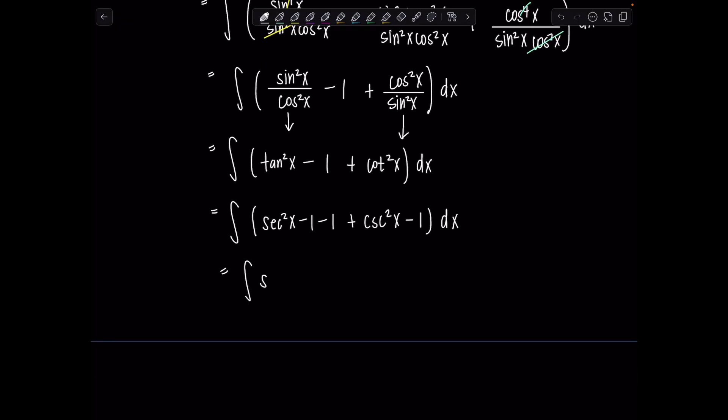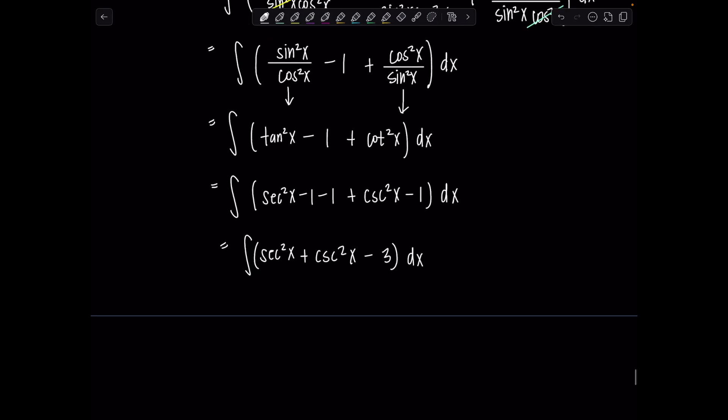Altogether now, I've got sec²x + csc²x - 3 dx. And then you could just integrate term by term. This will be tan x - cot x - 3x + C. And voila.